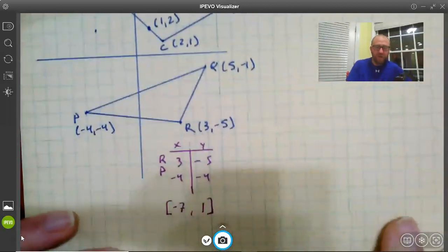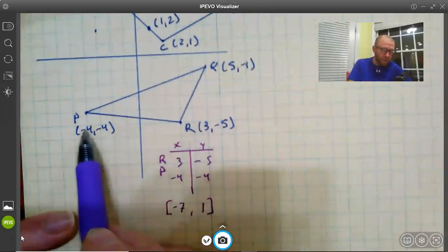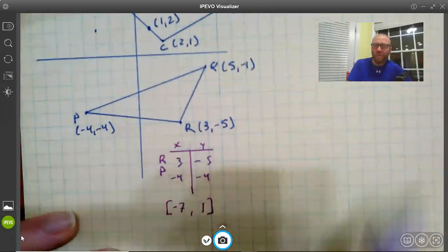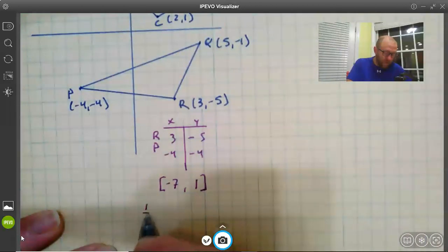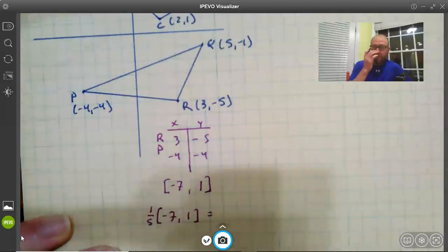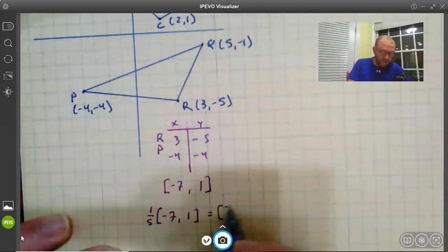So this vector here, negative 7, 1, will take us from R to P, meaning we go back 7 spaces and up 1, which I guess we can just count spaces and get that anyway. Now we want to find out what 1/5th of that is. So 1/5th of negative 7, 1. And this is actually pretty easy because 1/5th times negative 7 is negative 7/5ths, and 1 times 1/5th is 1/5th.